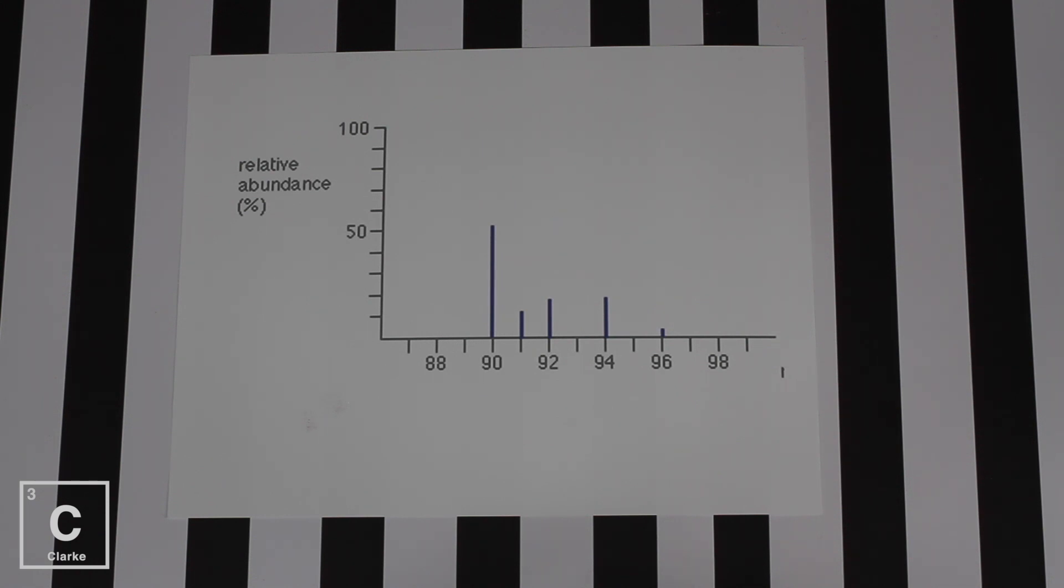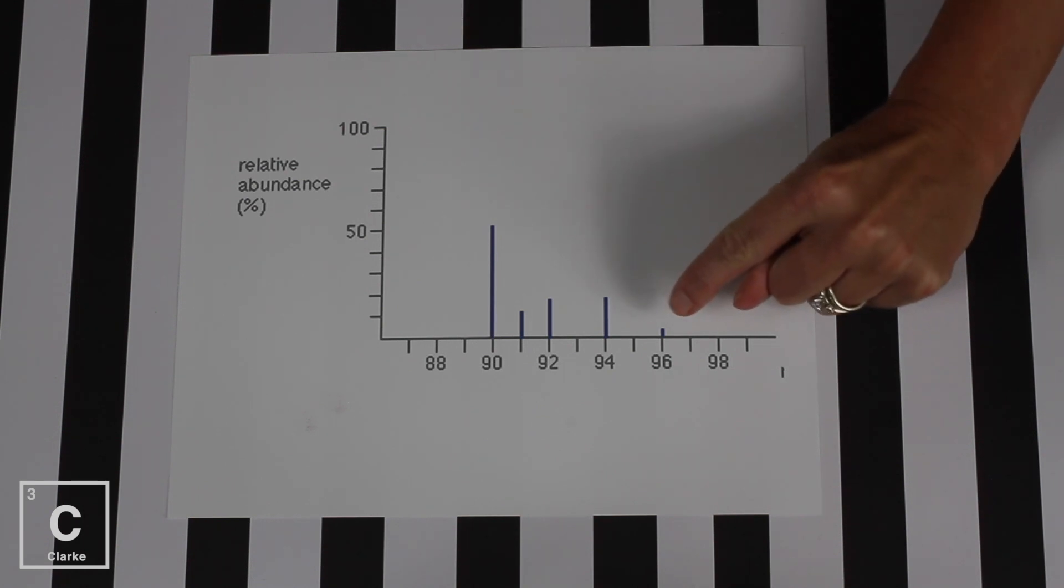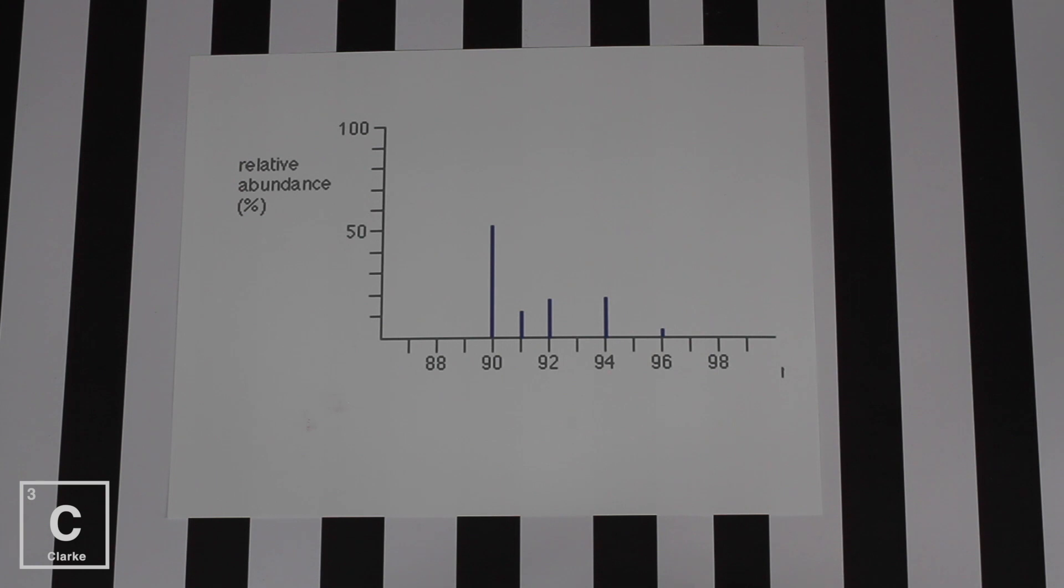And look that 92 and 94 mass number is pretty much even. So 92 and 94 both 18%. And then don't forget this little bitty bar right here. When the mass number is 96, it is 4% abundant.